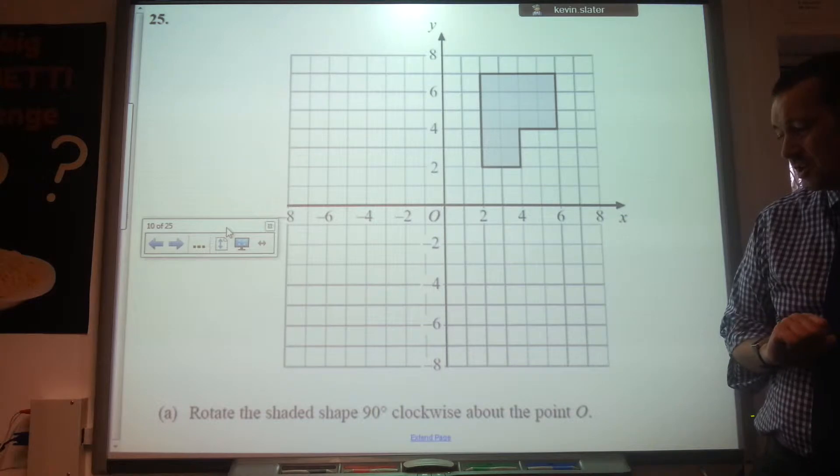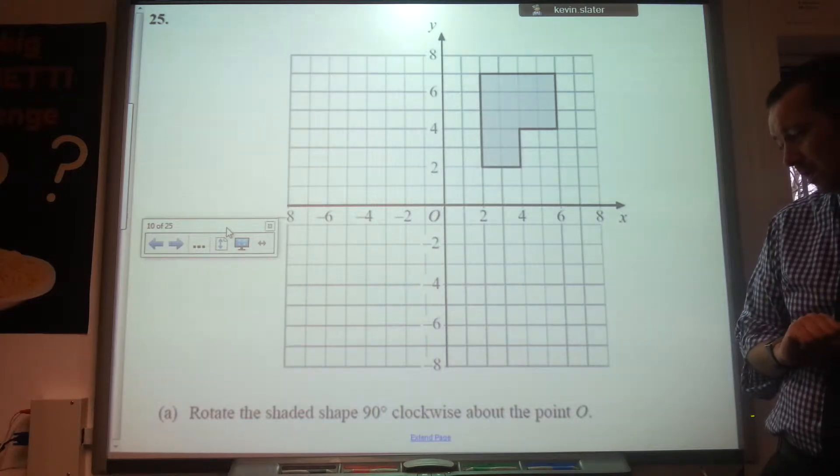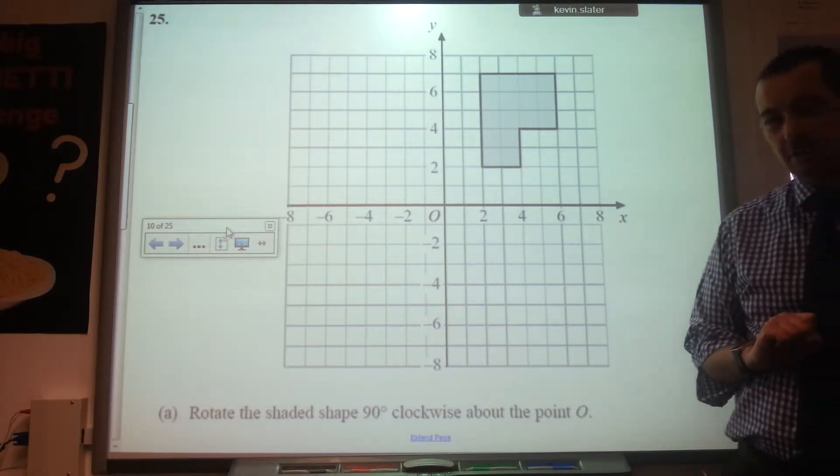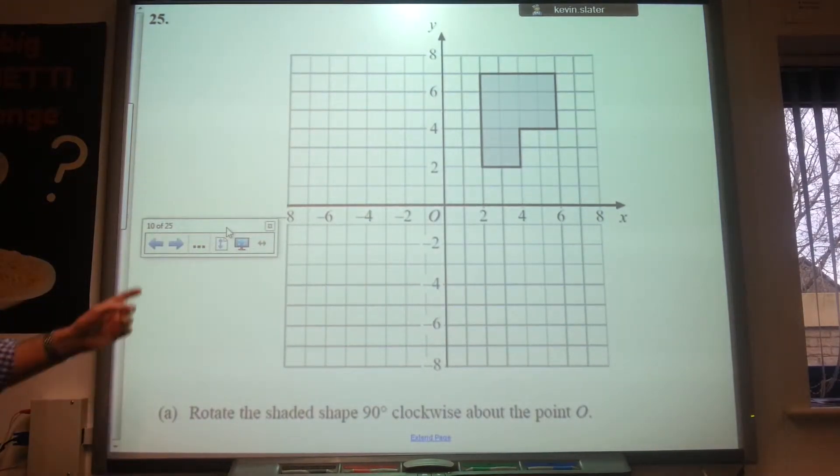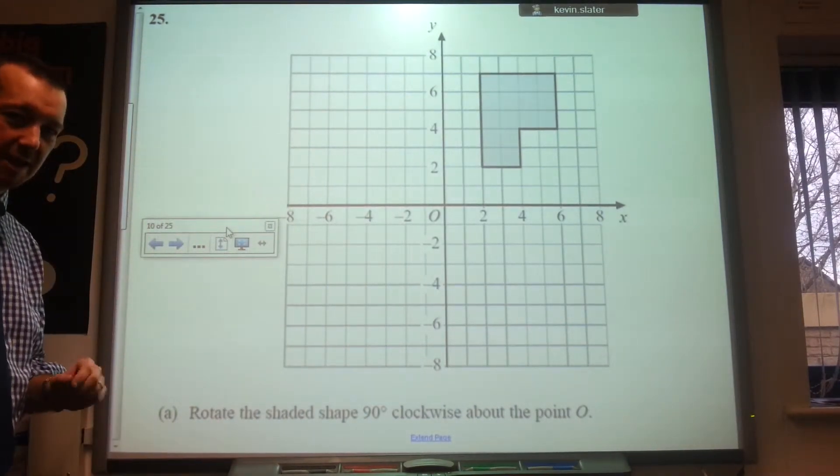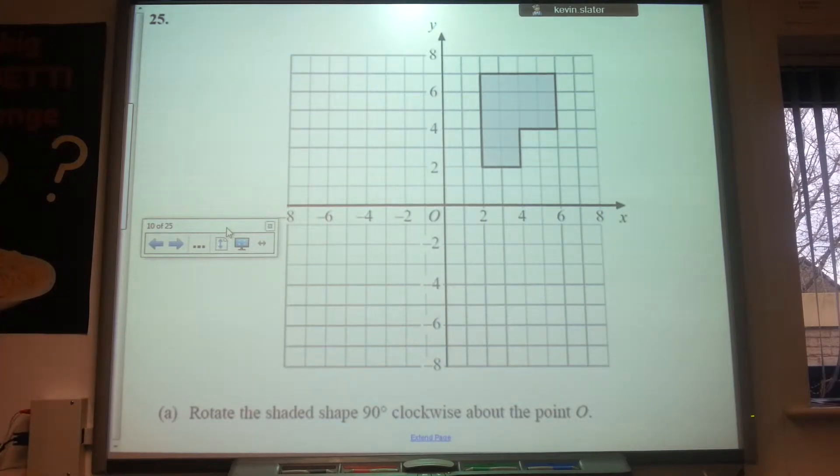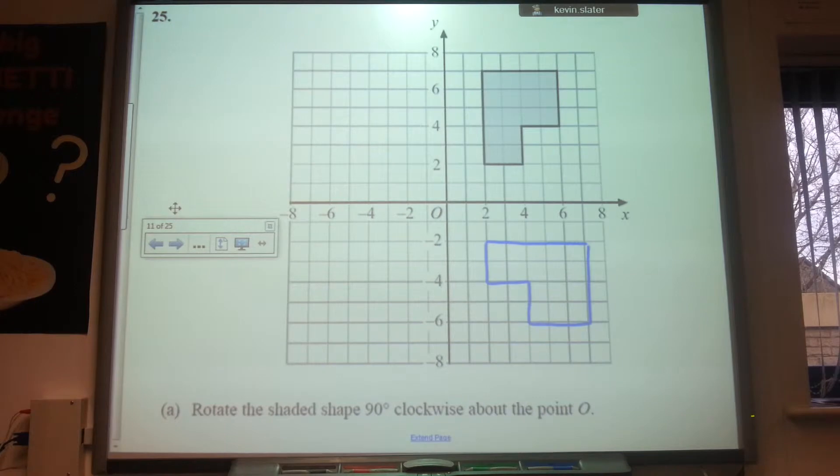First of all, rotate the shaded shape 90 degrees clockwise about a point zero. So, you know, that's it. When you're doing each question, if you just pause it so you can get a good look at it. Okay. There's your answer for the first one. Next one.